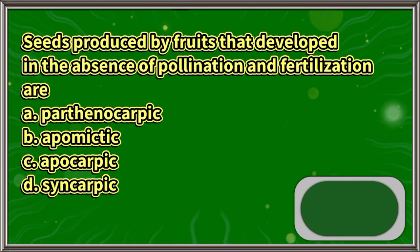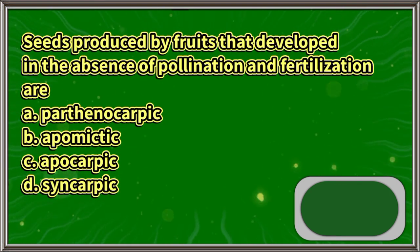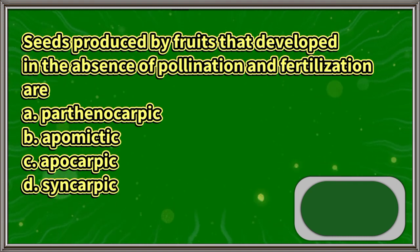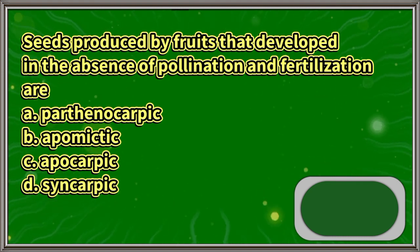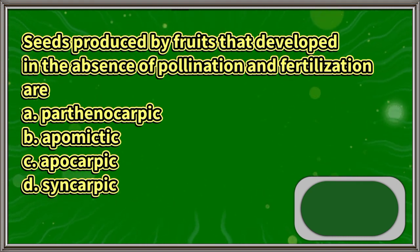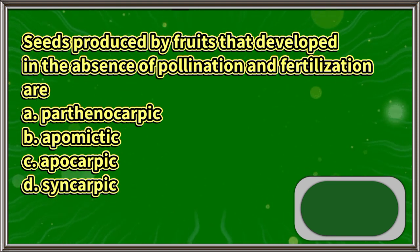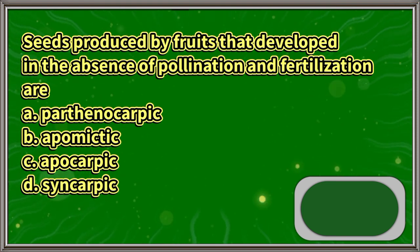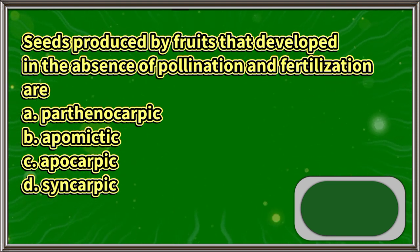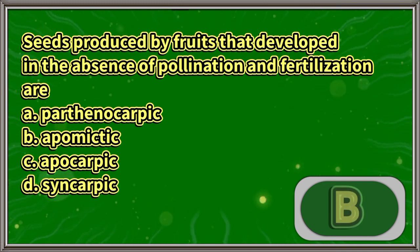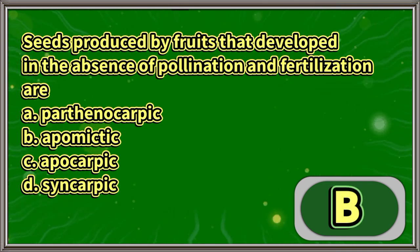Seeds produced by fruits that developed in the absence of pollination and fertilization are: A. Parthenocarpic. B. Apomyctic. C. Apocarpic. D. Syncarpic. The answer is letter B.